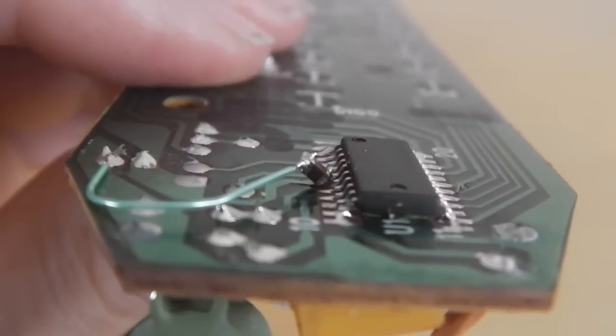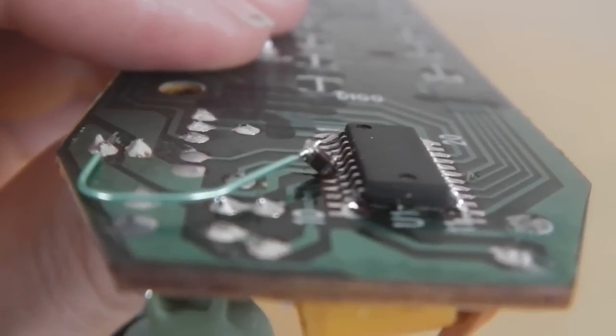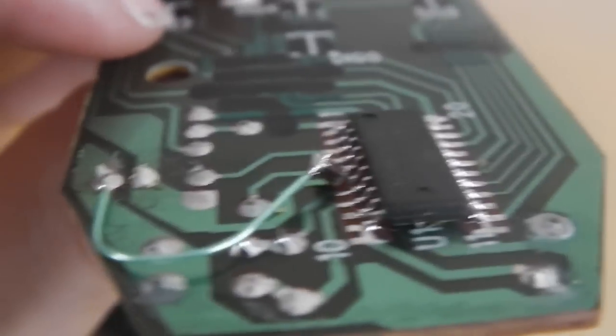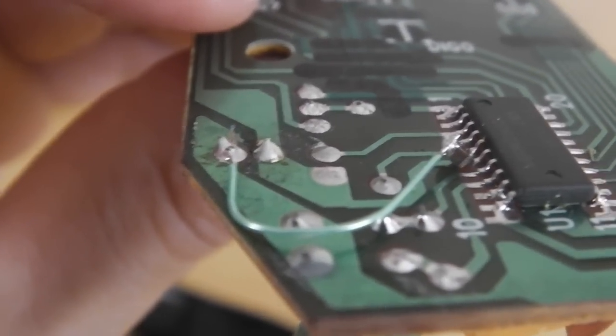So you can see I've stood a capacitor off the pin of the IC, and then the green wire is actually going back to the zero volts of the battery.